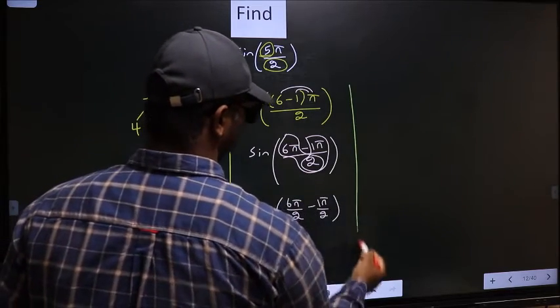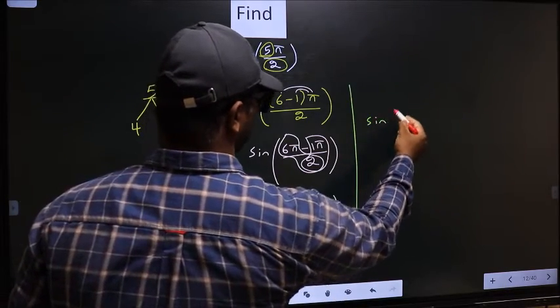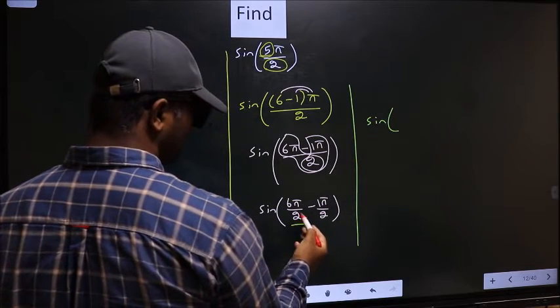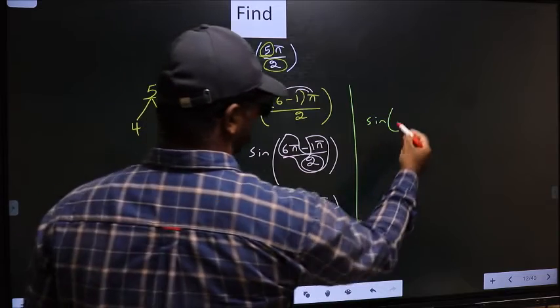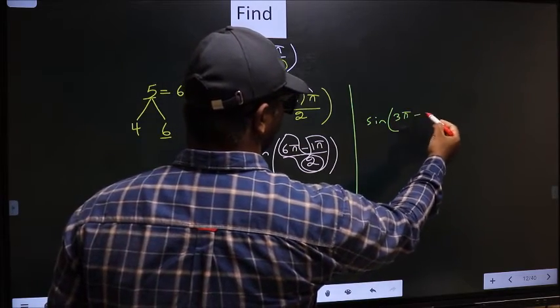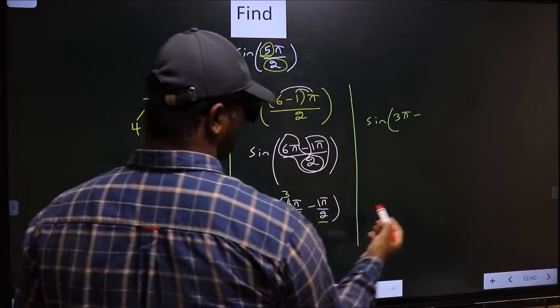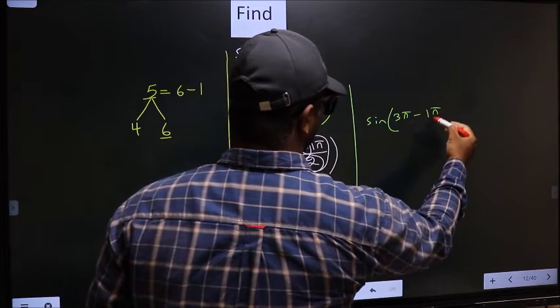Next, sin. Now here you should cancel 2 1's, 2 3's. So we get 3π minus, here no change, 1π/2.